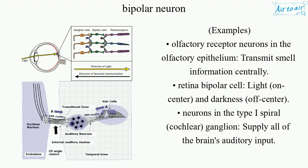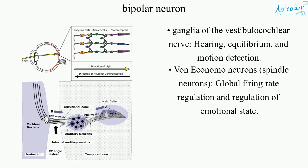Neurons in the spiral cochlear ganglion supply all of the brain's auditory input. Ganglia of the vestibulocochlear nerve: hearing, equilibrium, and motion detection.